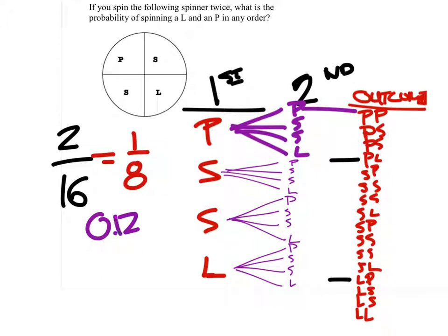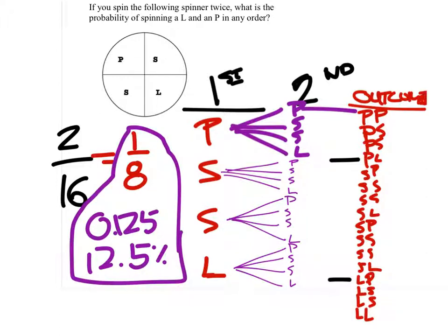So one eighth would be 0.125, which is 12.5 percent. And this one would be the actual answer.